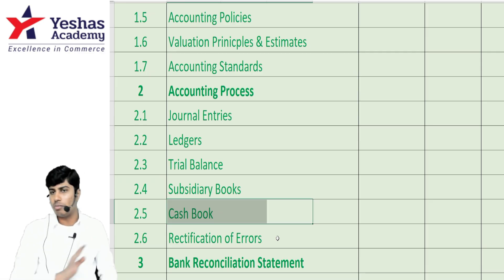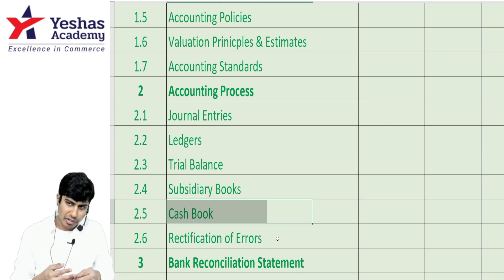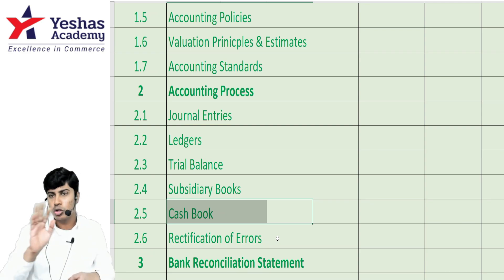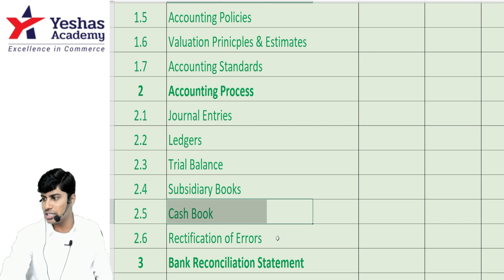For petty cash book, don't memorize the format. In the question, whatever expenses are given, write only those expenses in your petty cash book.